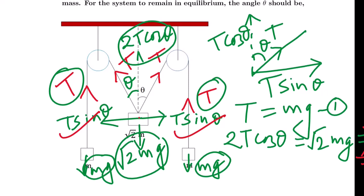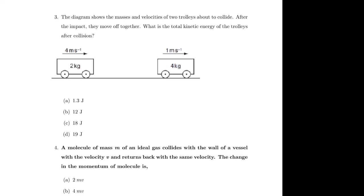The next question: The diagram shows the masses and velocities of two trolleys about to collide. After the impact, they move off together. What is the total kinetic energy of the trolleys after the collision? Since they move off together, this is a perfectly inelastic collision in one dimension.